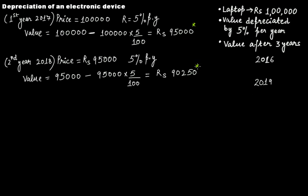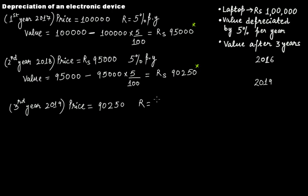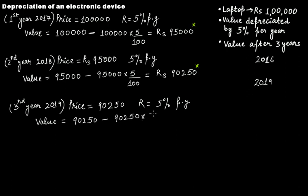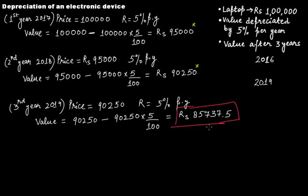This 90,250 acts as the principal for the next period — the third year. At the beginning of 2019, the value has become 90,250. The rate of depreciation is again 5% per year. At the end of 2019, the value will be 90,250 minus 5% of 90,250, giving rupees 85,737.50. This is the selling price at the end of 2019.